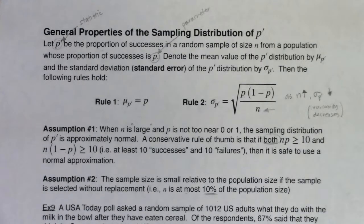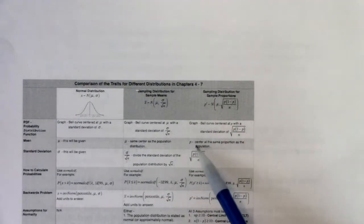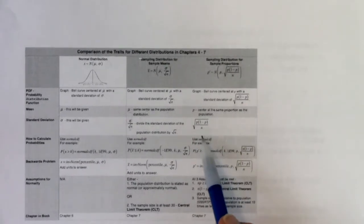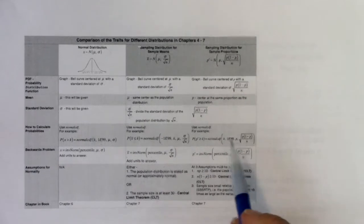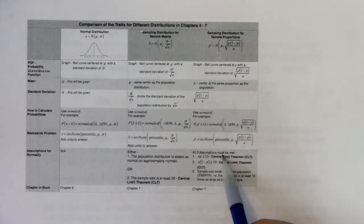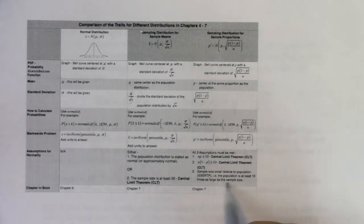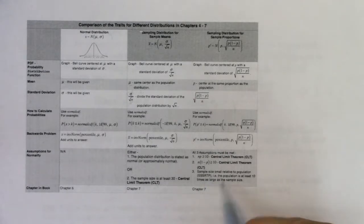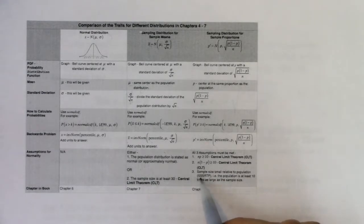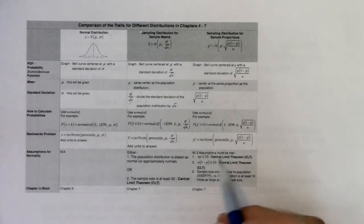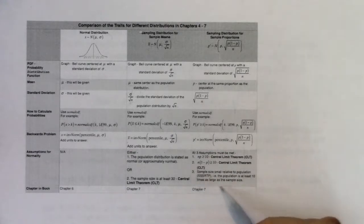Referring back to our trait table: under this last column, we've got our center at p, our standard error at √(p(1−p)/n), and to get normality all three assumptions must be met — np ≥ 10, n(1−p) ≥ 10, and sample size small relative to the population, meaning the population is at least 10 times as large as the sample. I'll abbreviate this as 'sssrtp' — that's not standard stats notation, just something you'll see in my class. We'll cover the mechanics in chapter 7 and the why in chapter 8.